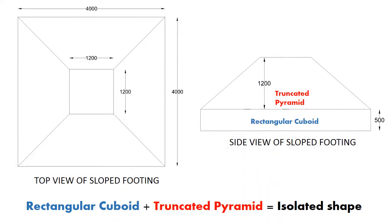Now after understanding what is isolated footing, let's see this picture showing the plan and side view of sloped footing. From the top view you can only find out the length and width of the rectangular cuboid portion and also the length and width of the truncated pyramid. For depth of footing you have to see the side view. In this sample sloped footing all dimensions are given in millimetres. The base of the footing is 4000 mm wide and 4000 mm long. The top portion of the truncated pyramid is 1200 mm by 1200 mm. In the side view, depth of the rectangular portion is 500 mm, and the vertical depth of the pyramid is 1200 mm. So we have all the dimensions needed to calculate the volume of sloped footing.